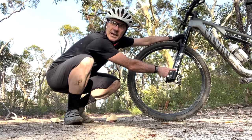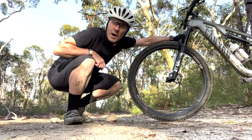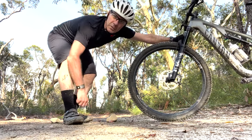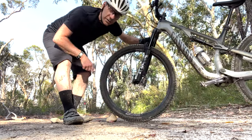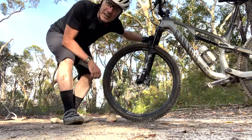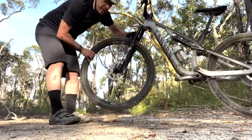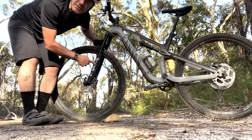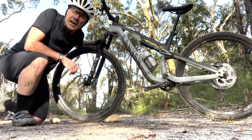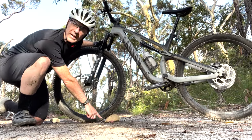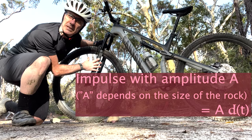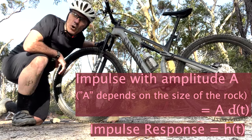We're going to think of this suspension fork of my bike as being the system. We're riding the bike along in a steady state until we hit a rock, and at that point the suspension is going to respond — the forks are going to compress and then, after going over the rock, recover to their original position. If the suspension forks are a linear system, we think of the rock as an impulse, and the forks' response is the impulse response.